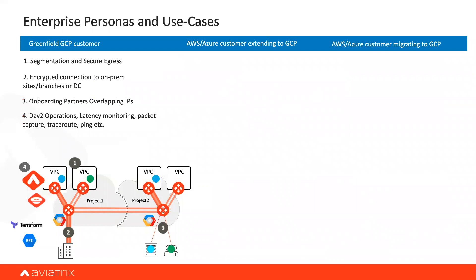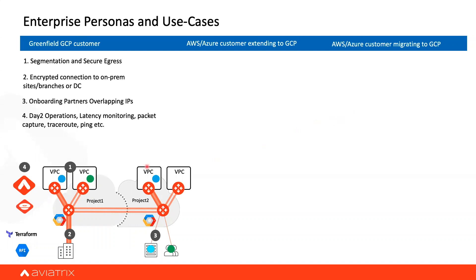Let's take a look at the enterprise personas and some use cases. If you are new in GCP and want to enable different networking and security services, customers are first worried about providing transit connectivity or a hub and spoke architecture in the cloud, because you don't want to create snowflakes or unicorns all over the place. You want to have a consistent architecture approach — so this is where they start.